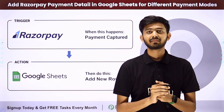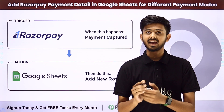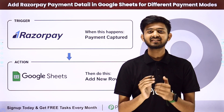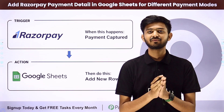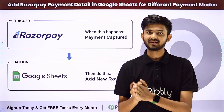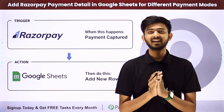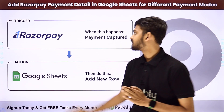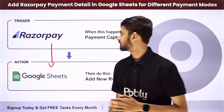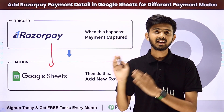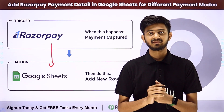For example, if we add a payment through UPI, we want these details to be added in the specific sheet for UPI payments. For that, we are going to create an integration between Razorpay and Google Sheet using PablyConnect.